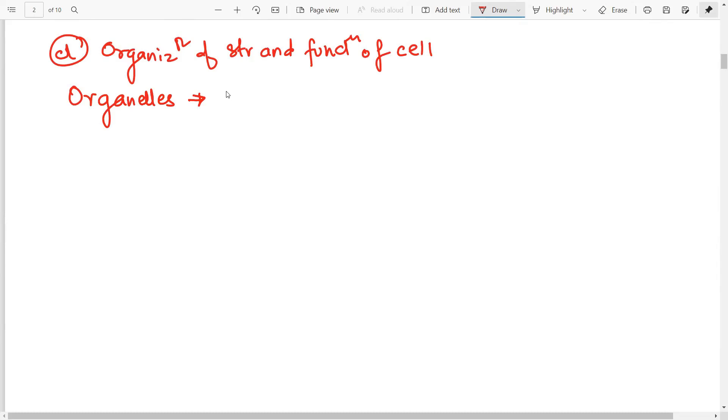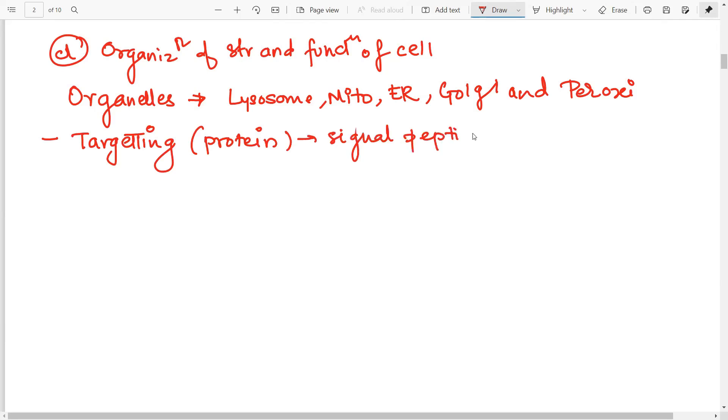Which organelles you need to focus on. So you need to do the lysosome, mitochondria, endoplasmic reticulum, Golgi and the peroxisomes. These organelles have to be done very efficiently. Now all of these, pertaining to all of these organelles, you should know the targeting to this organelle. So how will the protein be targeted? What is the signal peptide sequence? That is important over here.